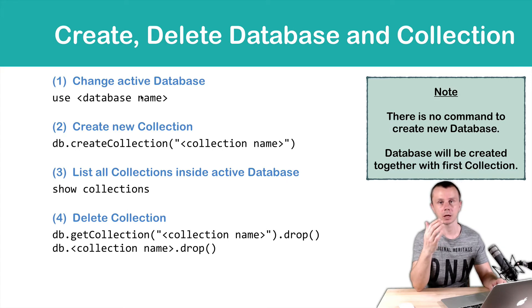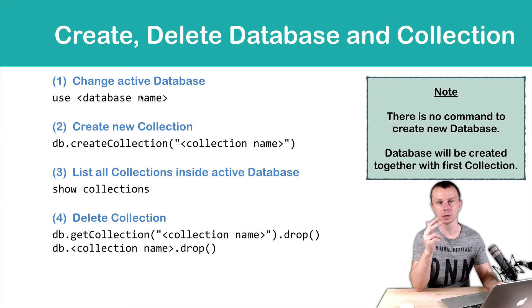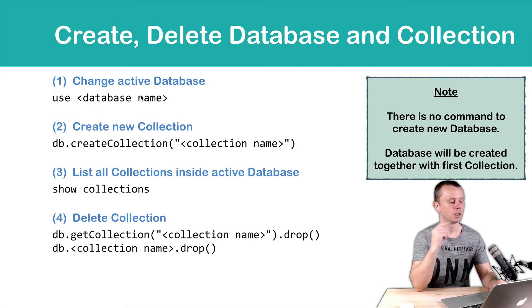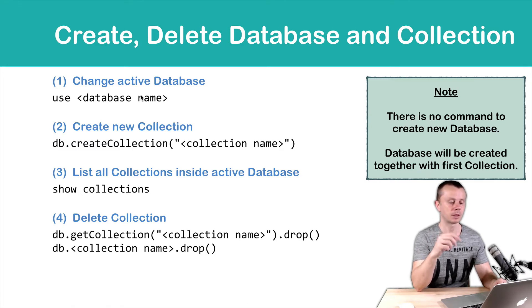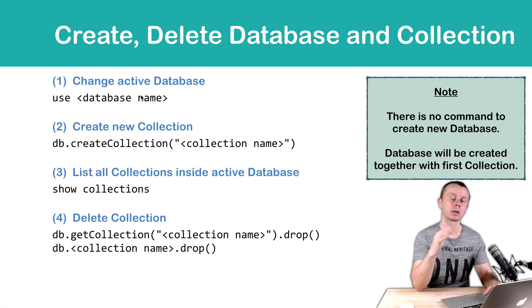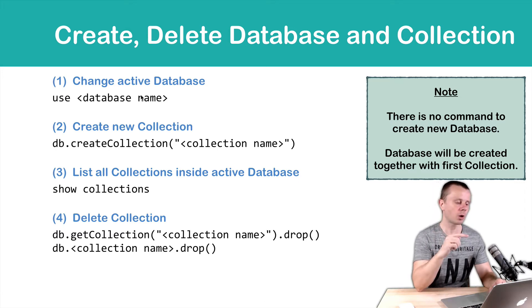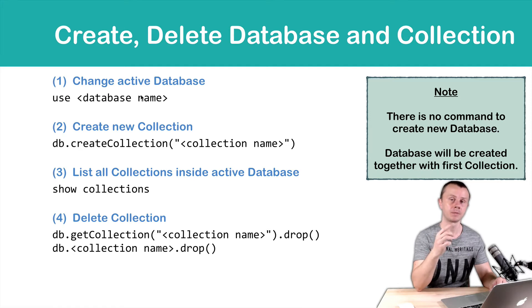If you need to delete a collection, you must use the drop method, and there are two options to accomplish this. The first option is to use the getCollection method, pass the collection name as an argument, and then call drop. The second option is to not use getCollection and instead pass the collection name without double quotes using dot notation. The first option is preferable, so I suggest you always use the getCollection method.